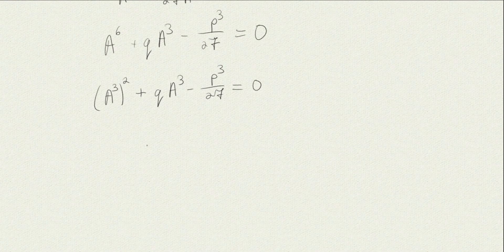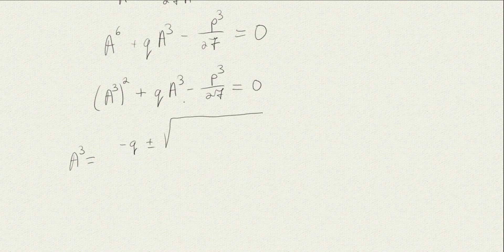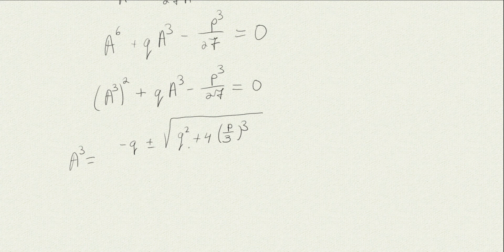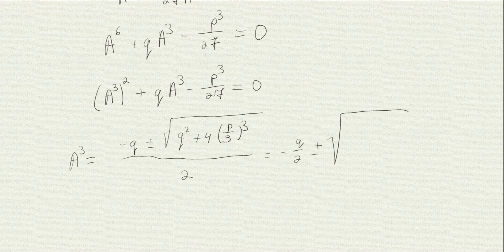This is precisely where knowing how to solve the quadratic equation helps, because (a³)² + q·(a³) − p³/27 = 0 is quadratic in a³. Applying the quadratic formula gives a³ = −q/2 ± √(q²/4 + p³/27), which can be written as a³ = −q/2 ± √((q/2)² + (p/3)³).